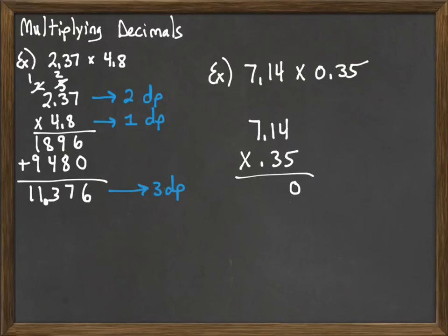Bring down the 0, carry the 2. 5 times 1 is 5, plus 2 is 7. Nothing to carry over. 5 times 7 is 35. And so we've done the first row.